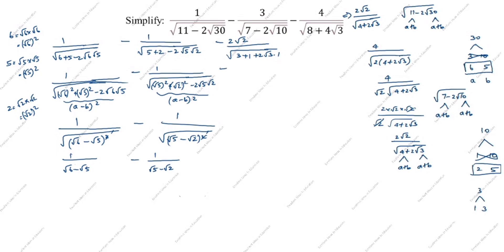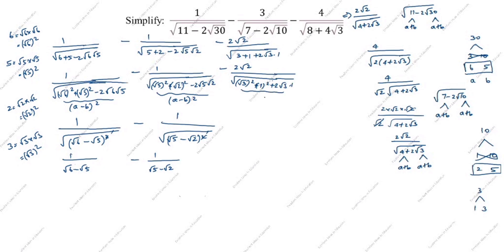Now this is a plus b plus 2ab format, so we need a² plus b² plus 2ab. We write 3 as root 3 whole square. So inside we have: root 3 whole square plus 1 squared plus 2 root 3 times 1, which is (root 3 plus 1) whole square. Cancelling square and root, result is minus 2 root 2 divided by (root 3 plus 1).